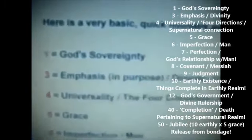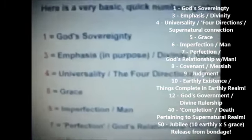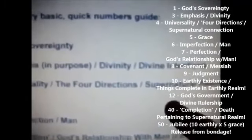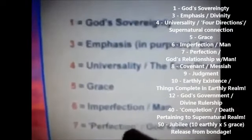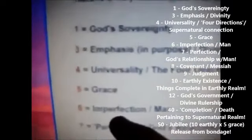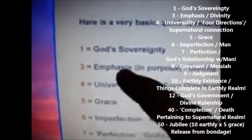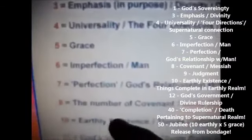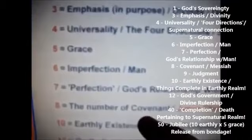Here's a very basic, quick numbers guide. One: God's sovereignty. Three: emphasis and purpose, divinity, divine intentions. Four: universality — the four directions. When God says he'll bring his people back from the four corners of the earth, he means everywhere. It's also the number of the supernatural realm. Five: the number of grace. Six: the number of imperfection — man. Seven: perfection. Six plus one equals seven — man in relationship with God, true relationship with God, sinless, which is only through Jesus Christ, is in a state of perfection. Eight is the number of covenant; it's the number of Jesus Christ — we'll cover that later in some very fantastic detail.